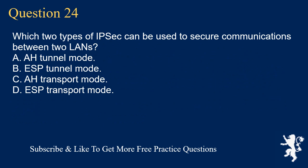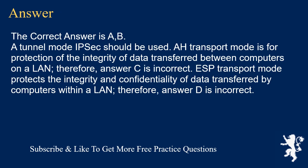Question 24. Which two types of IPsec can be used to secure communications between two LANs? A. AH tunnel mode. B. ESP tunnel mode. C. AH transport mode. D. ESP transport mode. The correct answers are A and B. AH tunnel mode and ESP tunnel mode IPsec should be used. AH transport mode is for protection of the integrity of data transferred between computers on a LAN. Therefore, answer C is incorrect. ESP transport mode protects the integrity and confidentiality of data transferred by computers within a LAN. Therefore, answer D is incorrect.